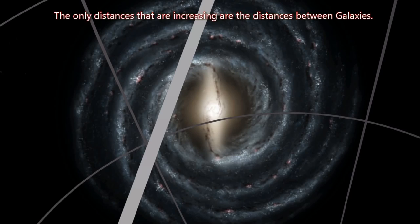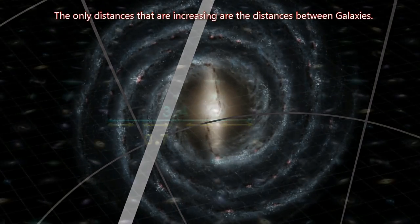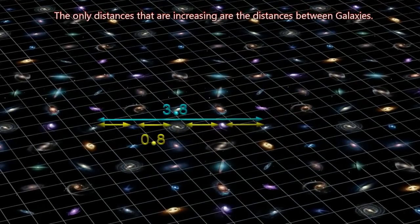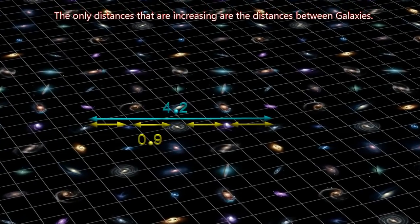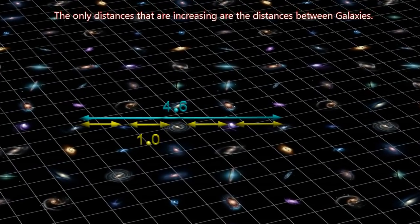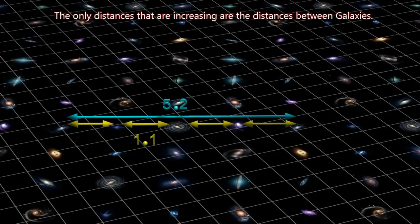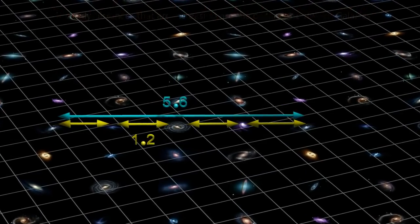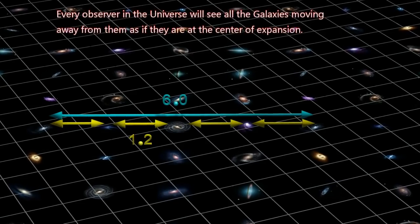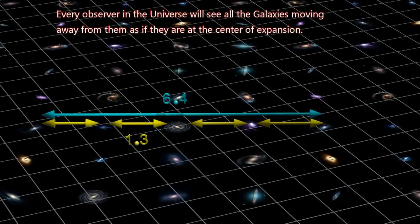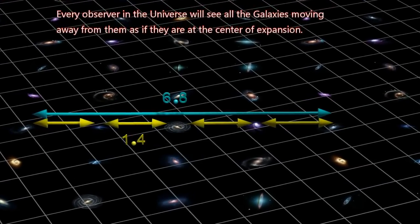The only distances that are increasing are the distances between galaxies. Every observer in the universe will see all the galaxies moving away from them as if they are at the center of expansion.